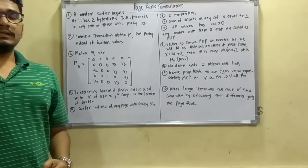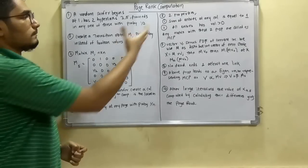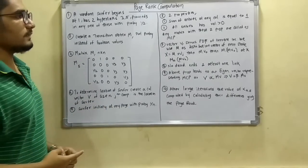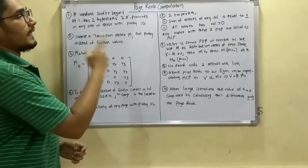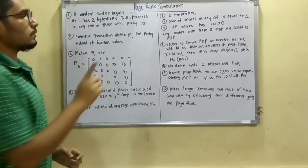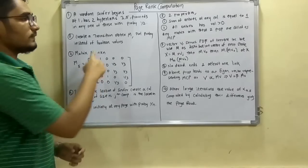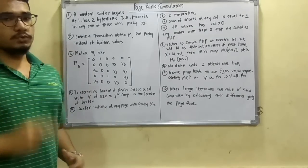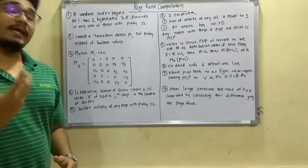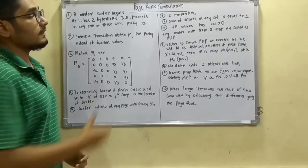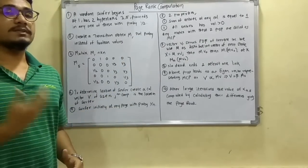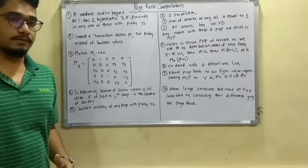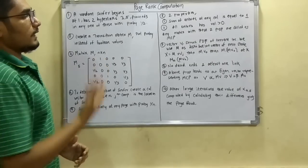This Markovian matrix, or transition matrix M, has two properties: the sum of entries in any column should be equal to 1, and all entries of the column should be greater than 0. If these two properties are satisfied, then that matrix is called an MCP — a Markovian Chain Process, or Markovian Chain Matrix, MCM.